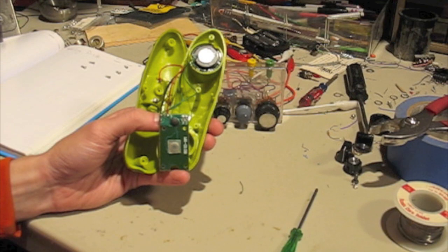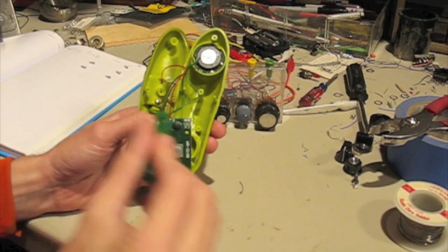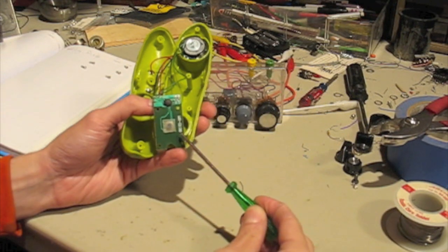Inside of the Yodeling Pickle, we find three button cell batteries, a small speaker, and the main board.